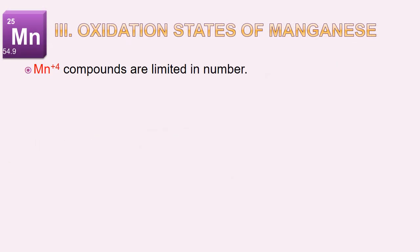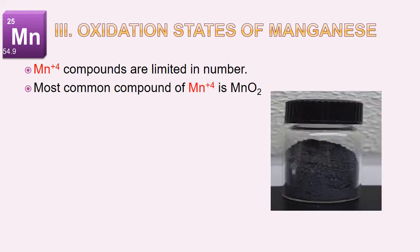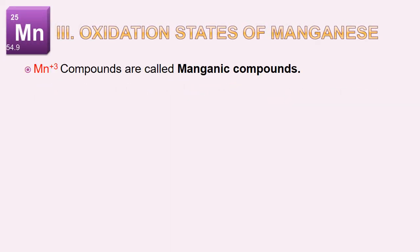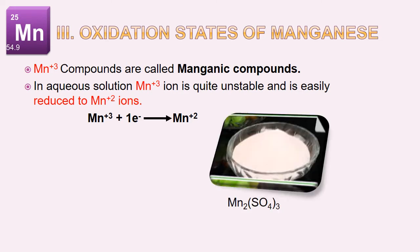Manganese +4 compounds are limited in number. The most common compound of manganese +4 is manganese dioxide. Manganese +3 compounds are called manganic compounds. The manganese +3 ion is very unstable in aqueous solution and reduces to the manganese +2 ion by gaining one electron — for example, manganese(II) sulfate.